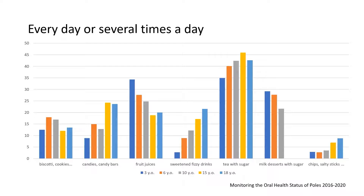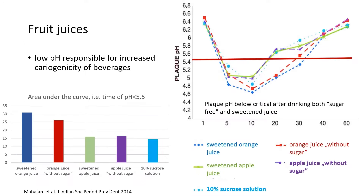In Poland, we traditionally drink tea with sugar, and this habit has a very negative impact on our health, not only on our teeth. Also, many people believe that sugar-free fruit juices are less harmful to teeth than sweetened ones, which is of course not true.